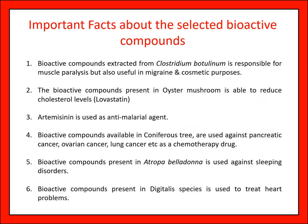Important facts about selected bioactive compounds: bioactive compounds extracted from Clostridium are responsible for muscle paralysis but also useful in migraine and cosmetic purposes. Bioactive compounds present in oyster mushroom are able to reduce cholesterol level. Artemisinin is used as an anti-malarial agent. Bioactive compounds available in coniferous trees are used against pancreatic cancer, ovarian cancer, and lung cancer. Bioactive compounds present in Atropa are used against sleeping disorders. Bioactive compounds present in vegetal species are used to treat heart problems. These are the important facts about medicinal plants, secondary metabolites, and ethnobotany, and how they are closely interrelated to each other.